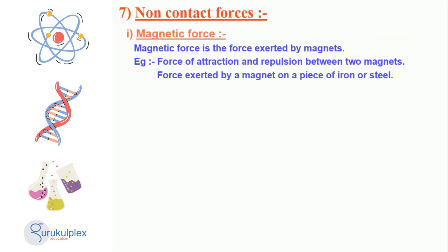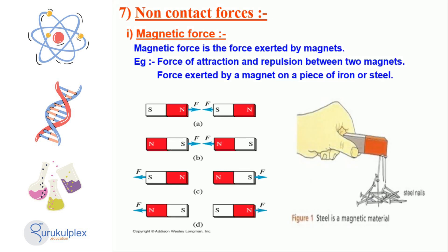Magnetic force is an inexplicable force that can cause an effect from a distance. It is caused by the alignment of the magnetic poles and can lead to the attraction or repulsion of magnetic objects. It has numerous applications in modern technology, such as electric motors, generators, loudspeakers, telephones, and MRI machines. Examples of this force can be seen in the pull and push between two magnets and also in the influence of a magnet upon a piece of iron or steel.